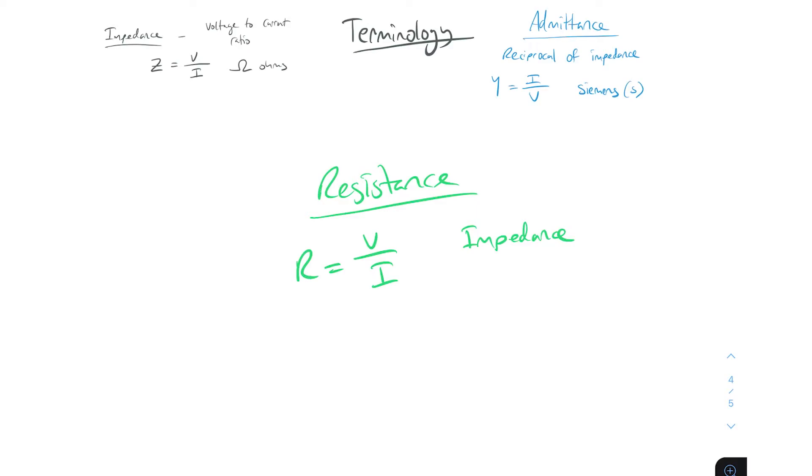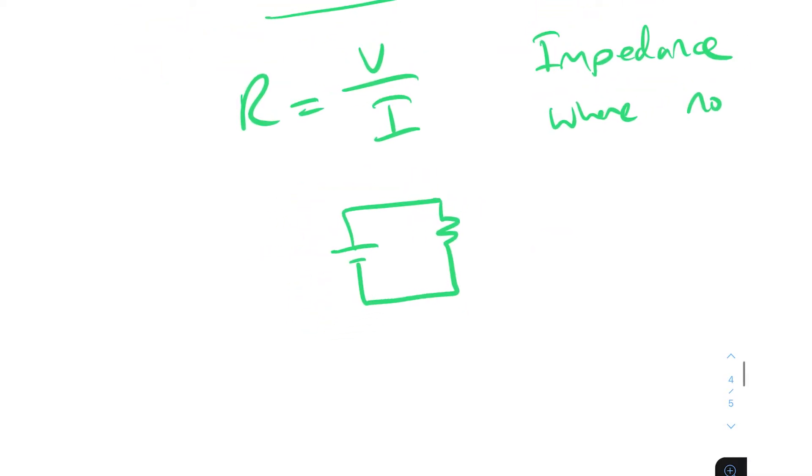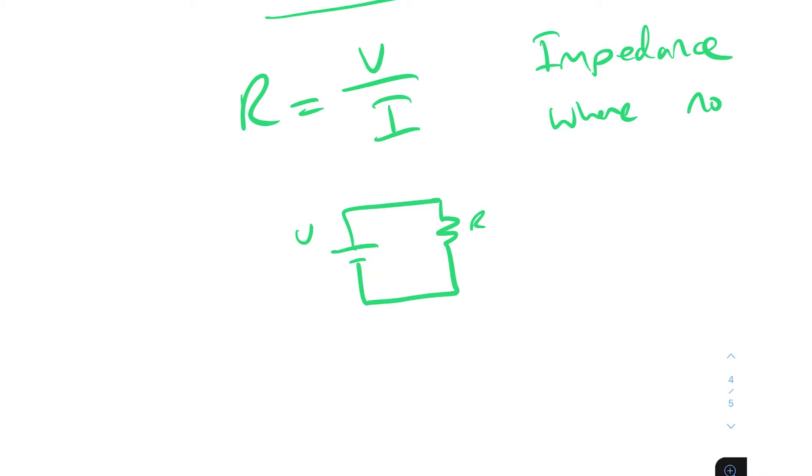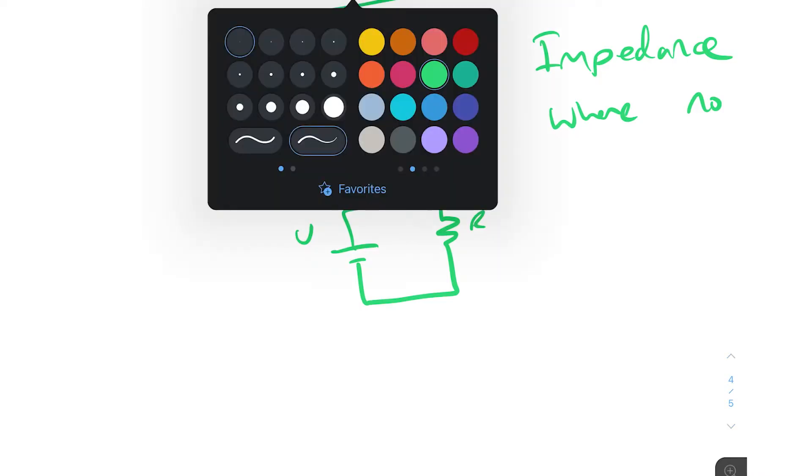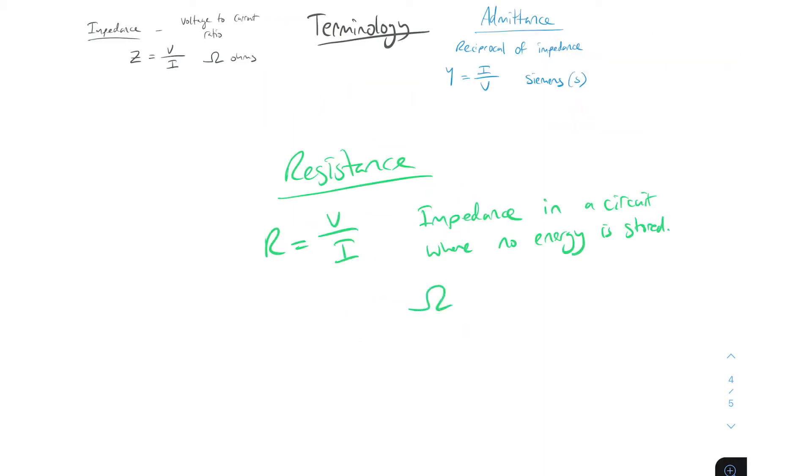Resistance is impedance in a circuit where there's no energy stored. So here if I've got a battery source, a voltage source here, and I've got a resistance here, there's no energy stored in this circuit. You've just got electrons flying with current going this way and back.